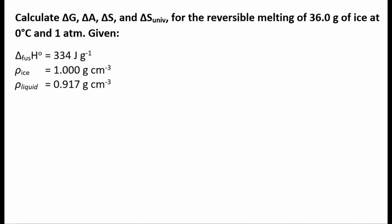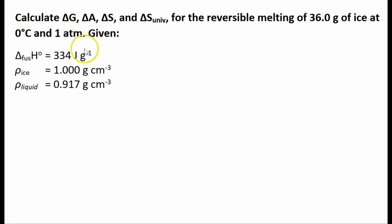Hello, Terry here. Here's an exam problem I wanted to share: calculate the change in Gibbs free energy, the change in Helmholtz energy, the change in entropy of the system, and the change in entropy of the universe for a reversible melting of 36.0 grams of ice at zero degrees Celsius and 1 ATM. We're given the change in enthalpy of fusion and the densities of ice and liquid water at 1 ATM. This is a phase change, so temperature is constant.